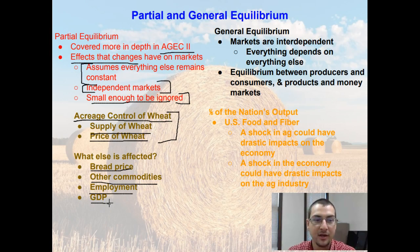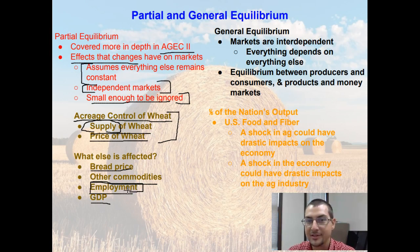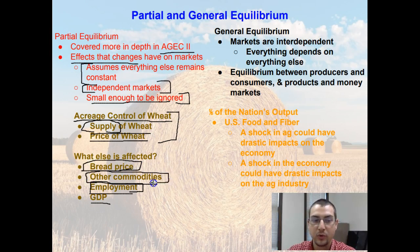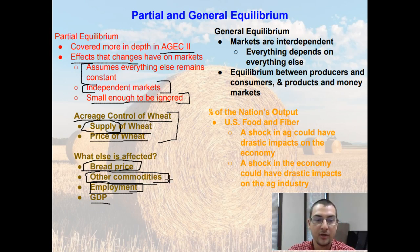If we actually reduce the supply of wheat, we don't need as many workers, so unemployment is going to be affected. And if we're reducing the supply of wheat, it raises the price of wheat, and wheat is an intermediate good used in bread, so bread price comes up. Reducing acreage allowed to be planted in wheat might also open up the doors to allow more acreage being planted in a different type of commodity, so now we're affecting other commodities as well.